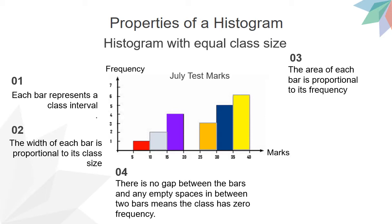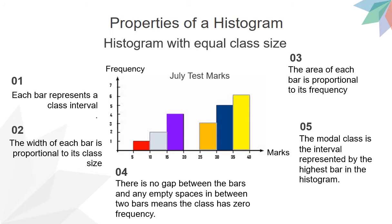Next, there is no gap between the bars. This is because a histogram represents a continuous data set. And in this example, the empty space in between the two bars means that the class has zero frequency. Lastly, the tallest bar in the histogram represents the modal class.